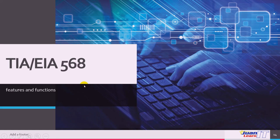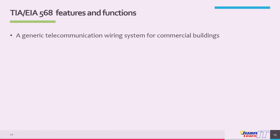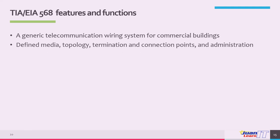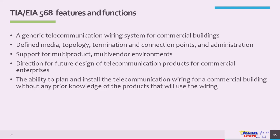According to the TIA EIA 568 documents, the wiring standard is designed to provide the following features and functions: a generic telecommunication wiring system for commercial buildings; defined media, topology, termination, and connection points and administration; support for multi-product, multi-vendor environments; direction for future design of telecommunication products for commercial enterprises; and the ability to plan and install telecommunication wiring for commercial buildings without any prior knowledge of the products that will use the wiring.